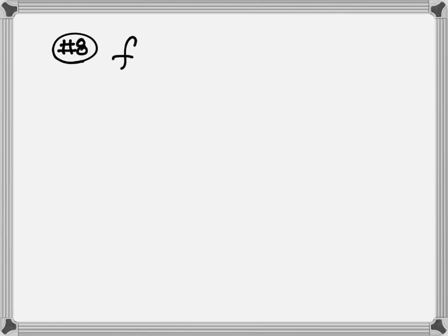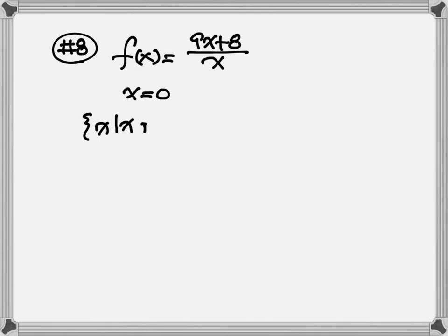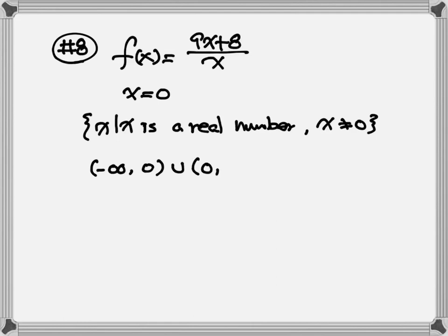Number eight in your book. Here we have f of x is equal to 9x plus a over x. We are still finding the domain. We're going to set the denominator equal to zero, so x is equal to zero. For the notation, x is a real number but x cannot equal zero. The interval notation will be negative infinity to zero, union zero to positive infinity.